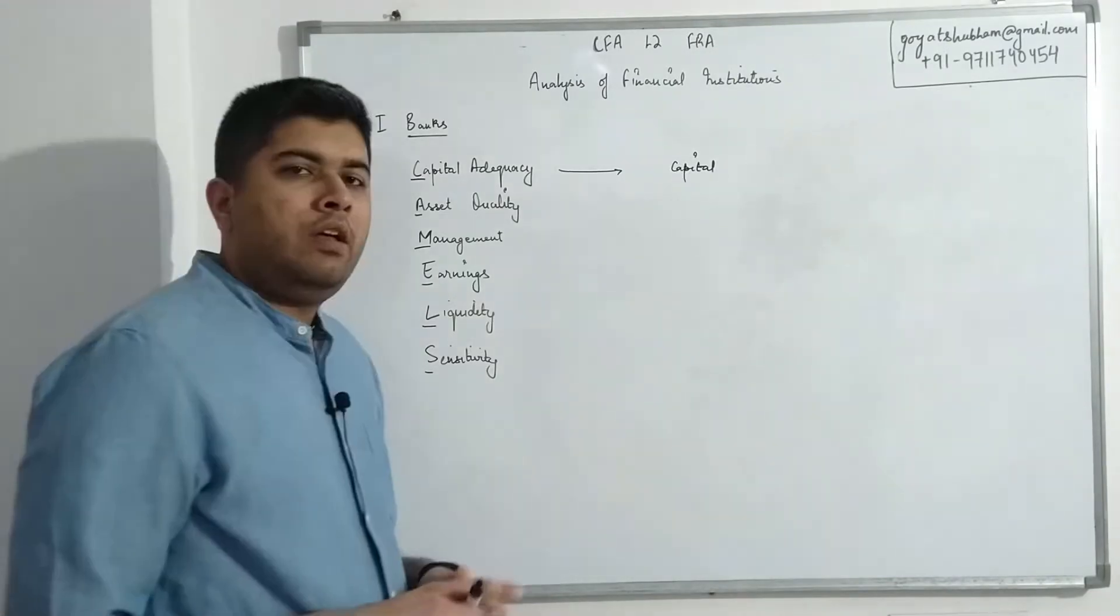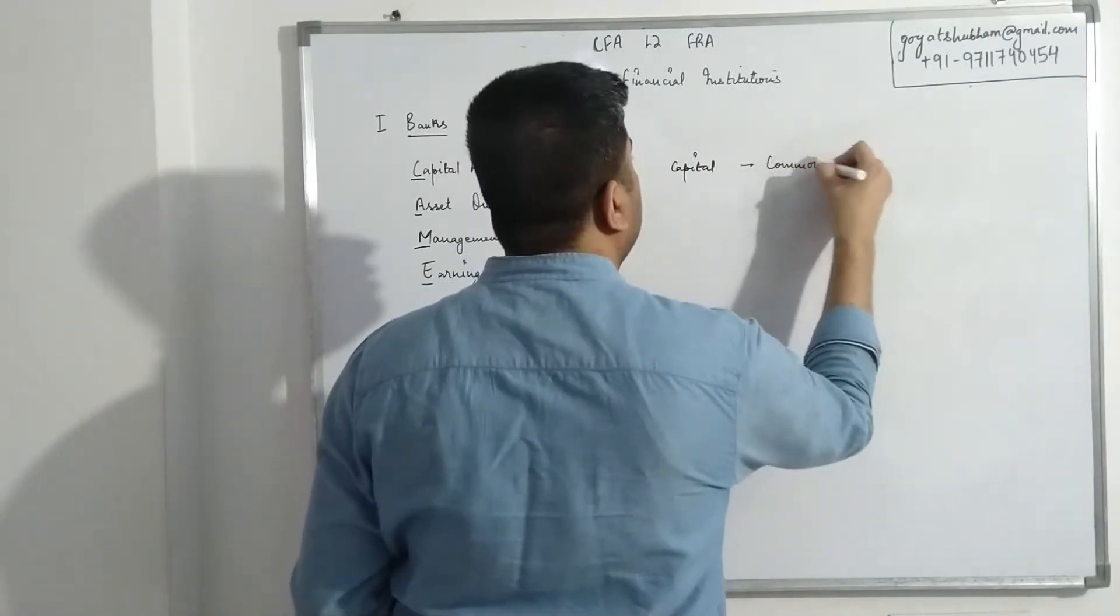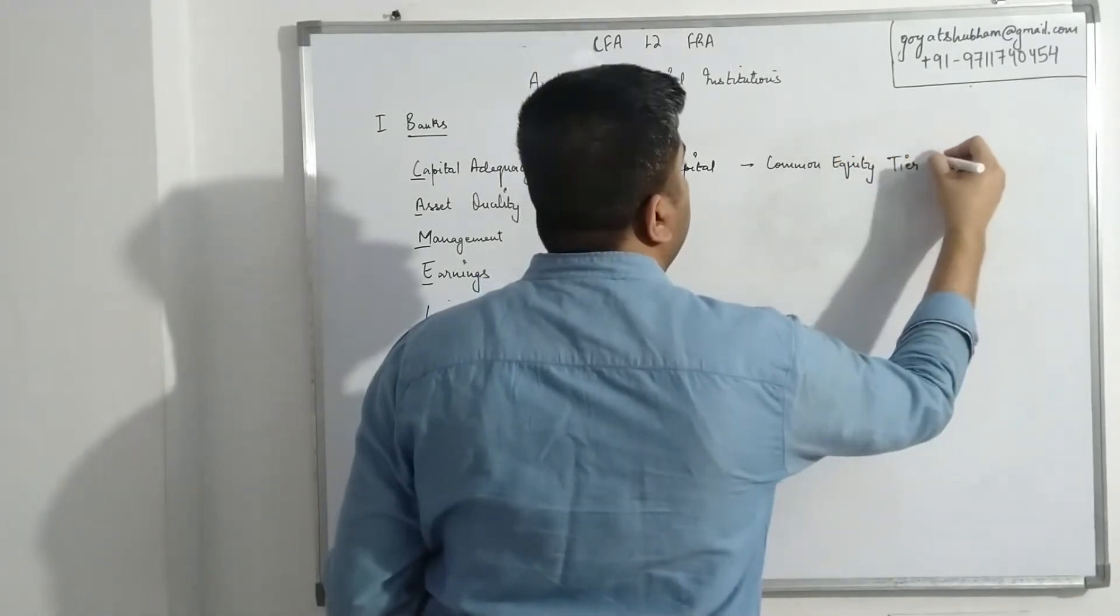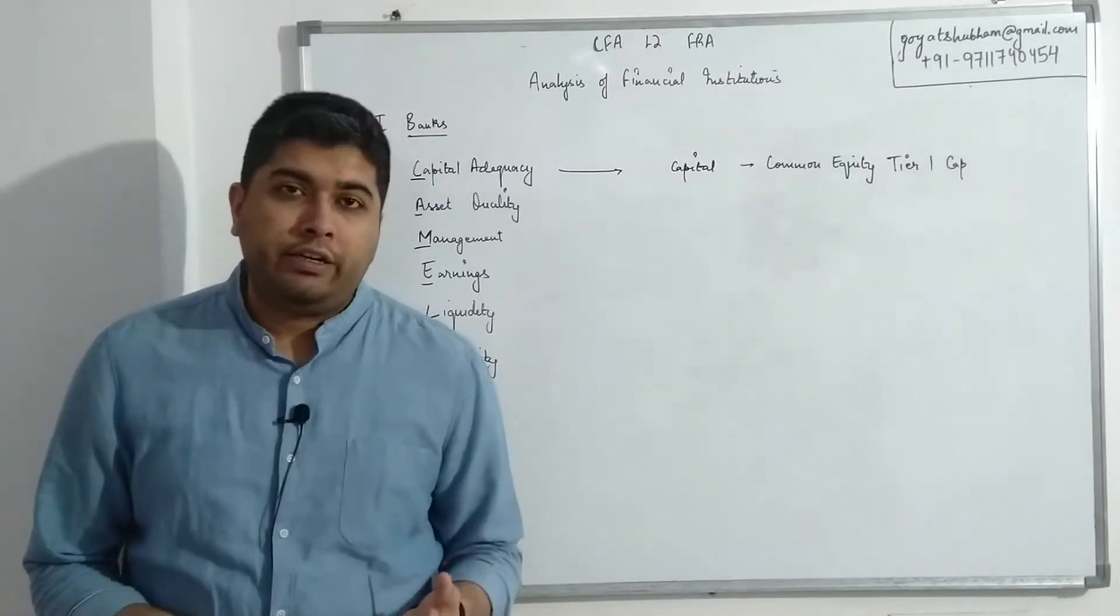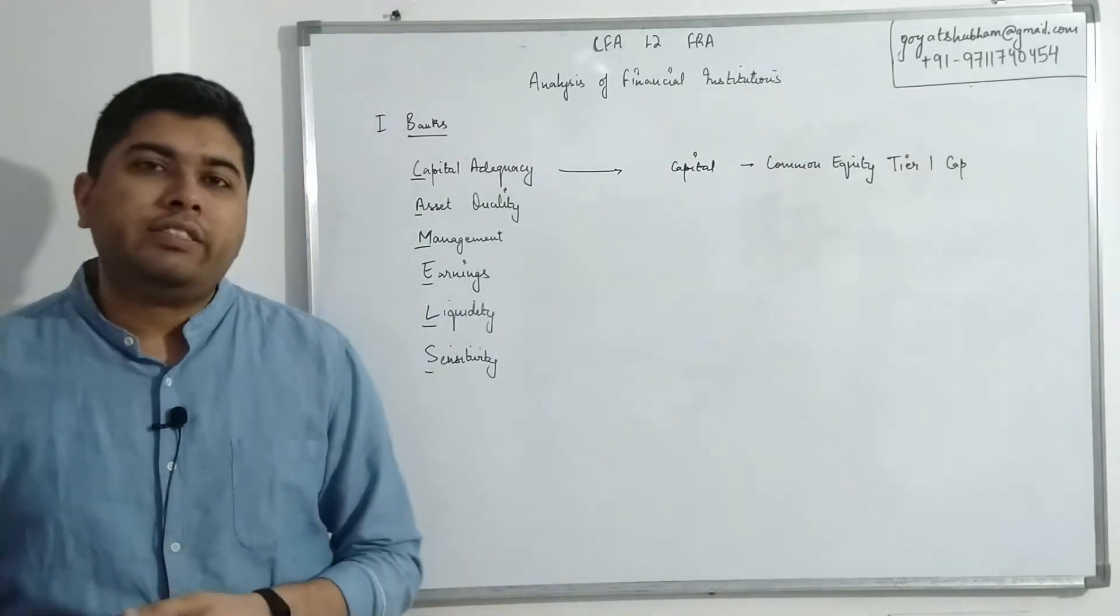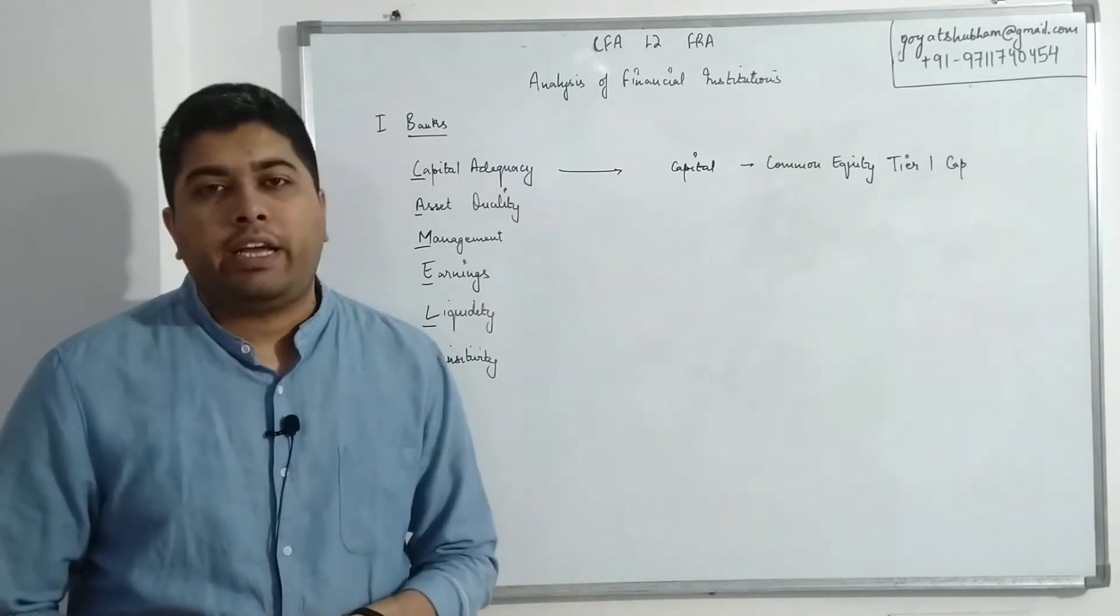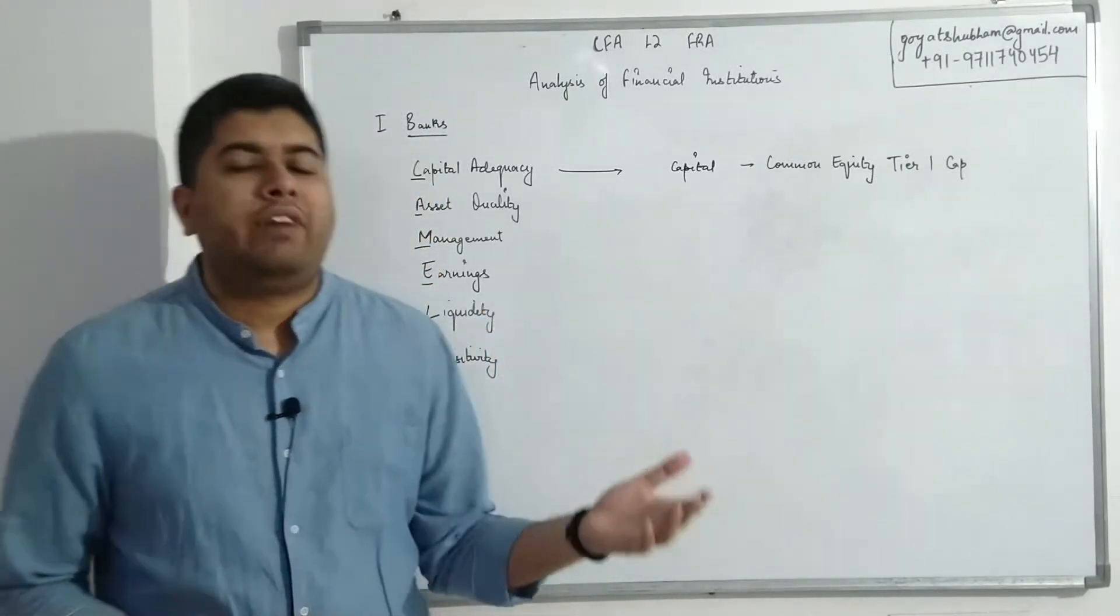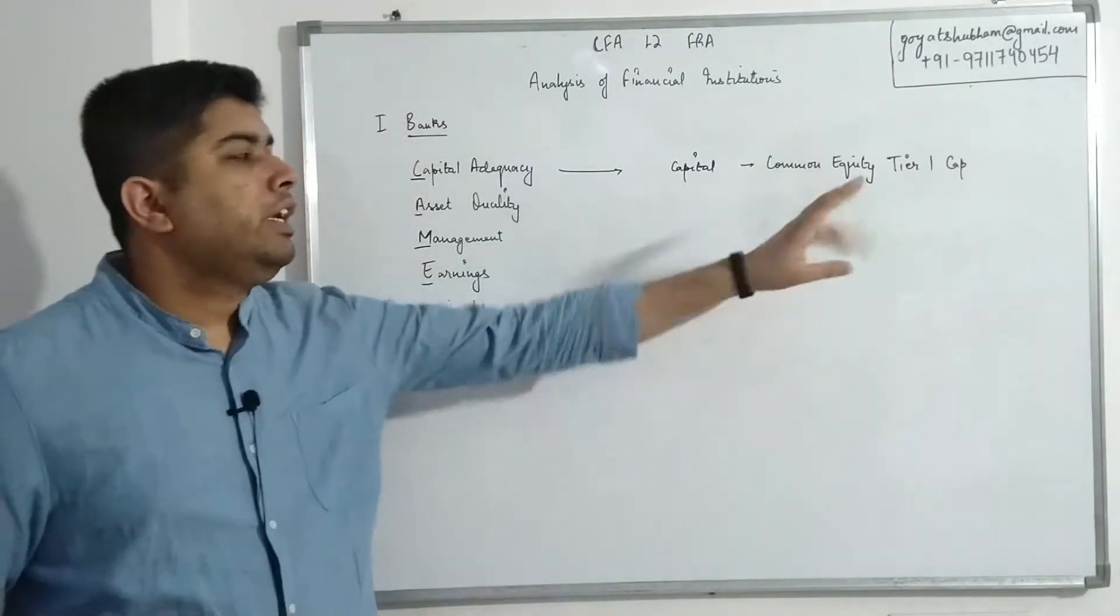For banks, capital is divided into three categories. The first category is called Common Equity Tier 1 Capital. Common Equity Tier 1 Capital includes your common equity and retained earnings, along with other comprehensive income adjusted for deferred tax if deferred tax is existing for a company. It also includes any additional paid-in capital.